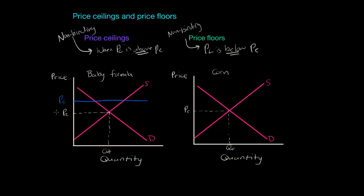If we recall from our last video we had a price of five dollars at equilibrium. Let's assume government says the price shall not rise above seven dollars. What impact will this price ceiling have on the market? The answer is it will have no effect — it's non-binding. The price is already below the maximum price of seven dollars, so there will be no impact on quantity demanded or quantity supplied.